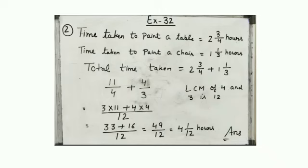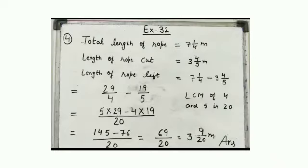Question number 4. Listen very carefully. Look at your book. A piece of length 3 4/5 meter is cut off from a rope 7 1/4 meter long. It means total length of rope is 7 1/4 meter and we have to cut 3 4/5 meters. What is the length of remaining piece? Remaining means baccha hua.